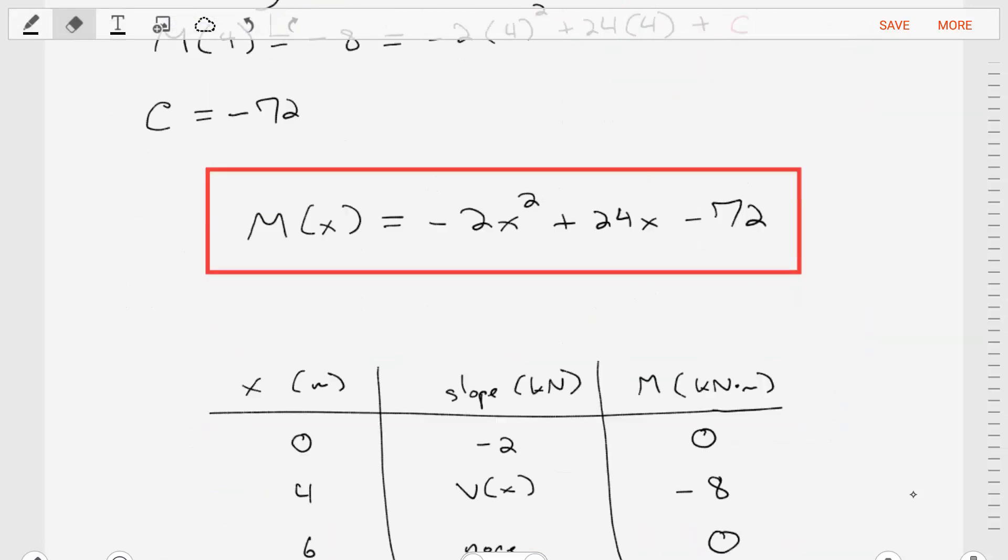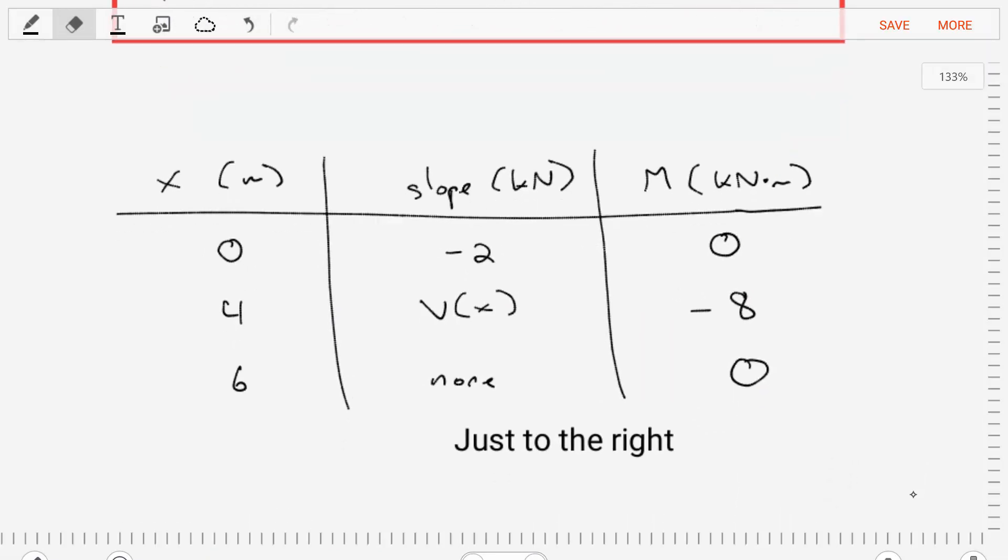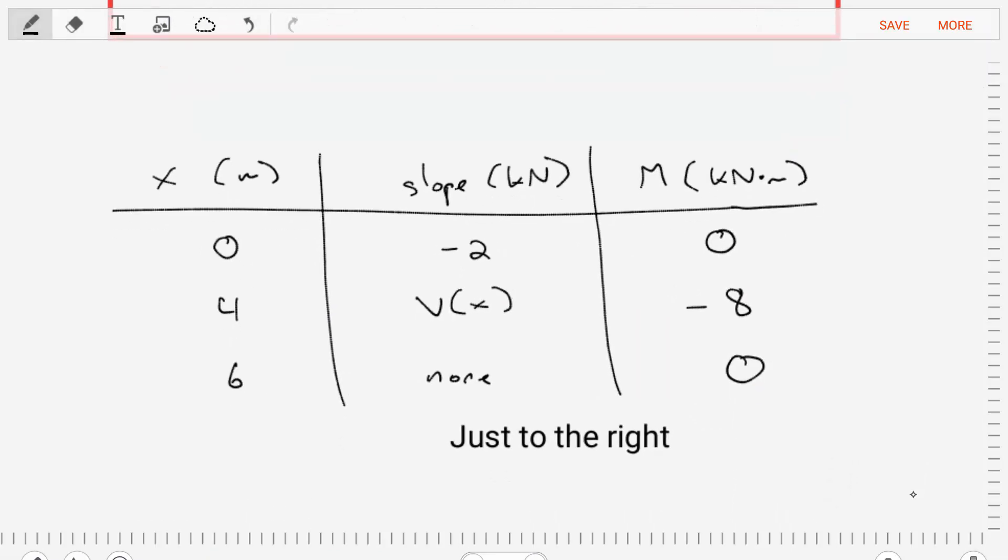The last step is for us to craft a table that summarizes the results of this diagram. We'll put the x position, the slope of the moment diagram dm dx, and the magnitude of the moment, where all of these are measures just to the right of x. So just to the right of zero, just to the right of four, just to the right of six meters, these measurements are taken.